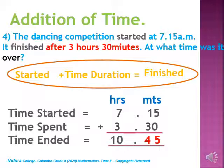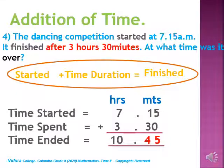Addition of time. Let's read the question: The dancing competition started at 7:15 a.m. It finished after 3 hours and 30 minutes. At what time was it over? You have the important words: started, finished, and after 3 hours 30 minutes. The started time is 7:15 a.m. and you have to find the time finished. After 3 hours and 30 minutes means the time duration, so you add the started time with the time duration. The answer is 10 hours and 45 minutes.